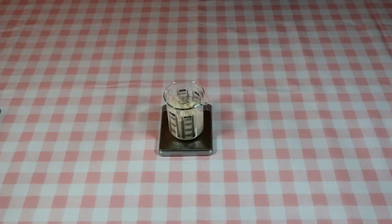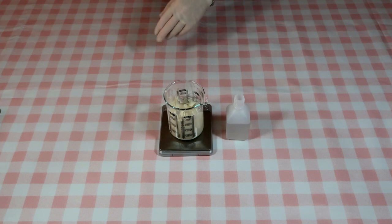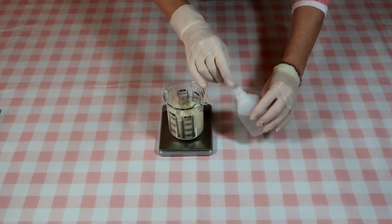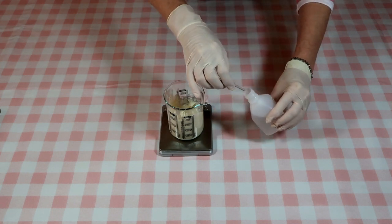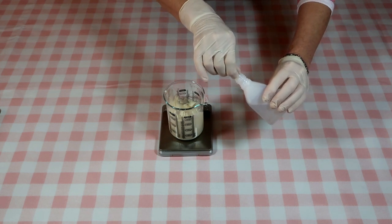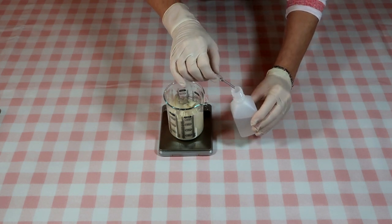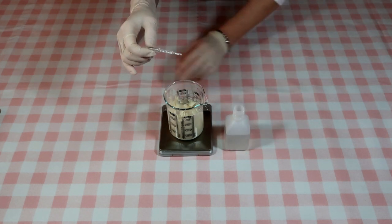Once the cream has started to thicken, it's time to add the preservative. For a first cream, I recommend up to one gram of preservative for every 100 grams of cream. This will give the cream a 12-month shelf life, but always make sure you follow the manufacturer's recommended guidelines.